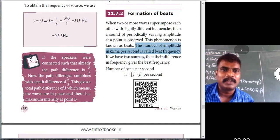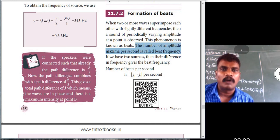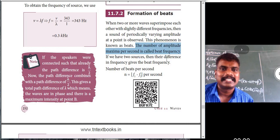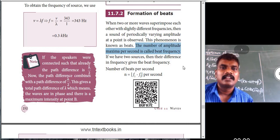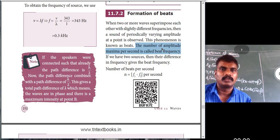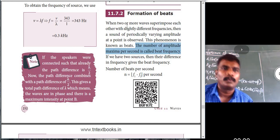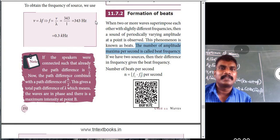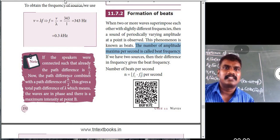The number of amplitude maxima per second is called beat frequency. If we have two sources, the beat frequency equals the difference in their frequencies: N = |f1 − f2| beats per second. This is the formation of beats — a very important topic. Thank you very much for listening to this class.